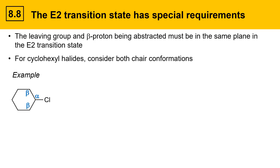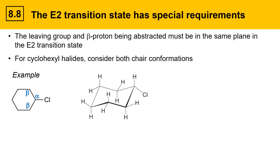Let's draw a chair cyclohexane for this molecule. In this chair cyclohexane, the chlorine is equatorial and the alpha position is the carbon it's attached to. The hydrogens on each beta position are not coplanar with the chlorine — neither one of these hydrogens is in the same plane as chlorine.